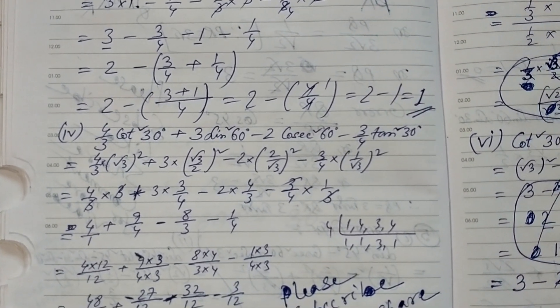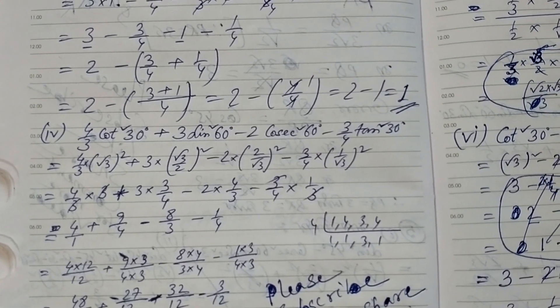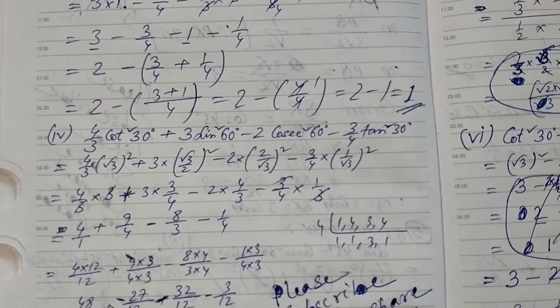Quadrant is 30 degrees. Sine 60 degrees is 2. Cosine 60 degrees is 3 by 4. Tan is 30 degrees.